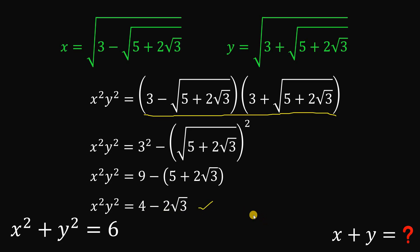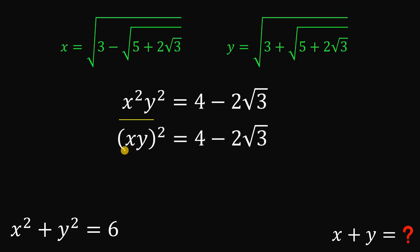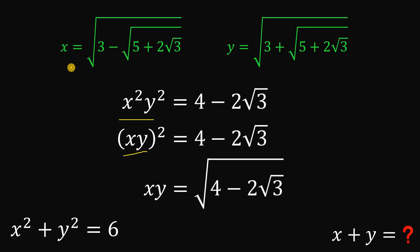Now let's focus on this result. Notice the left-hand side, x squared y squared, can be rewritten as x times y raised to the power of 2. Let's get the value of x times y by taking the square root on both sides. Take note: x is greater than 0 and y is also greater than 0, therefore the product of x and y is also greater than 0, so we only take the positive value. So xy is equivalent to the square root of 4 minus 2 times square root of 3.